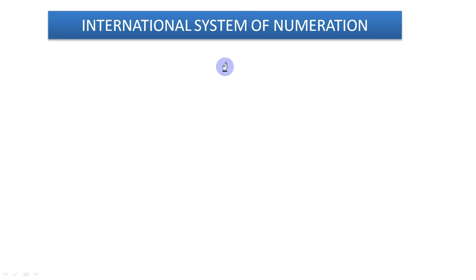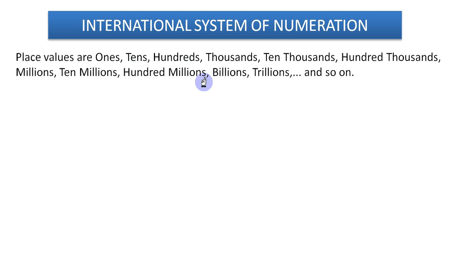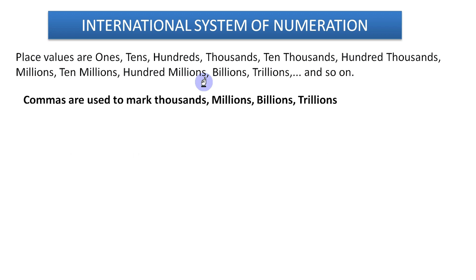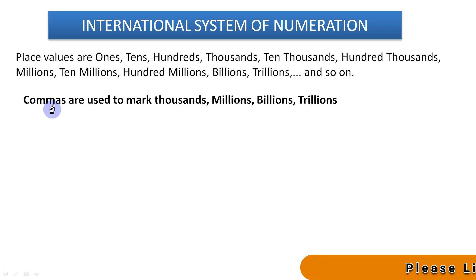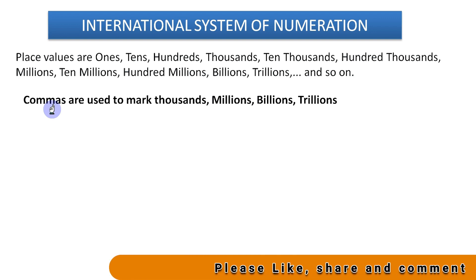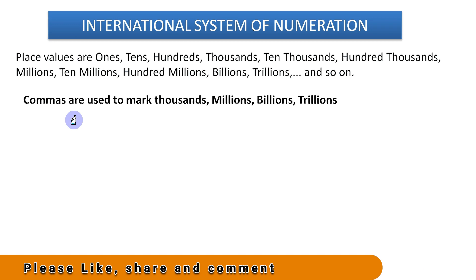Friends, you might have heard about millions, billions, trillions — these number names belong to the international system of numeration. This system is used internationally. In this system we have some place values. I will tell you about these place values in the place value table, and also about the commas. These commas are really very important and useful in reading and writing large numbers. Please stay with me.